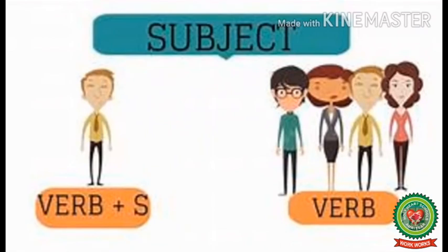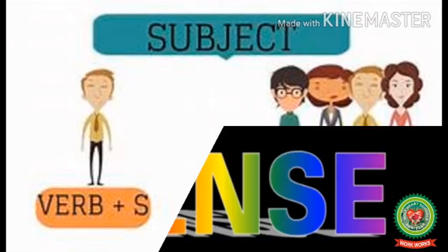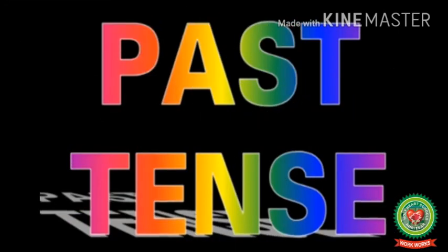Now we can say: if the subject is singular in number, we will use s or es with the present form of the verb; or if the subject is plural in number, we will use only the present form of the verb. Now let's discuss the second kind of tense, i.e. the past tense.